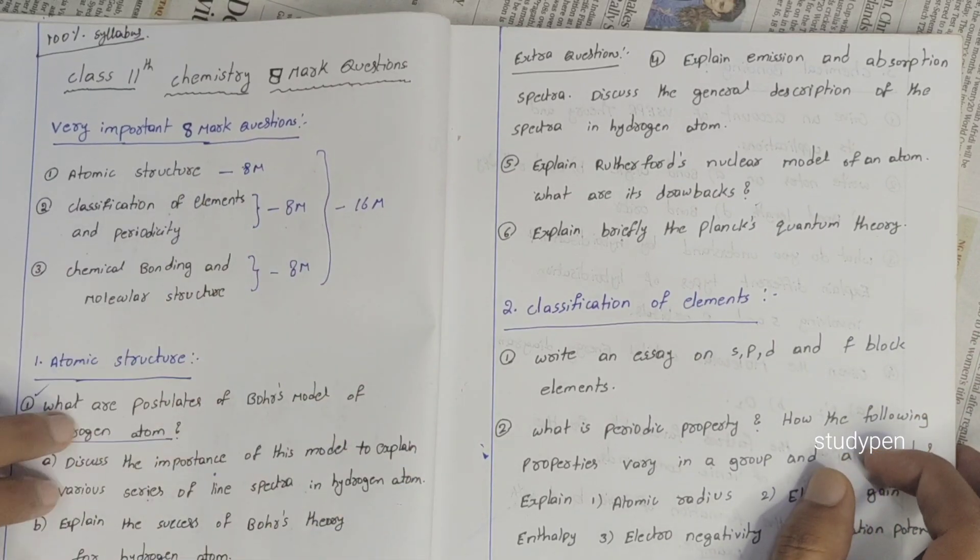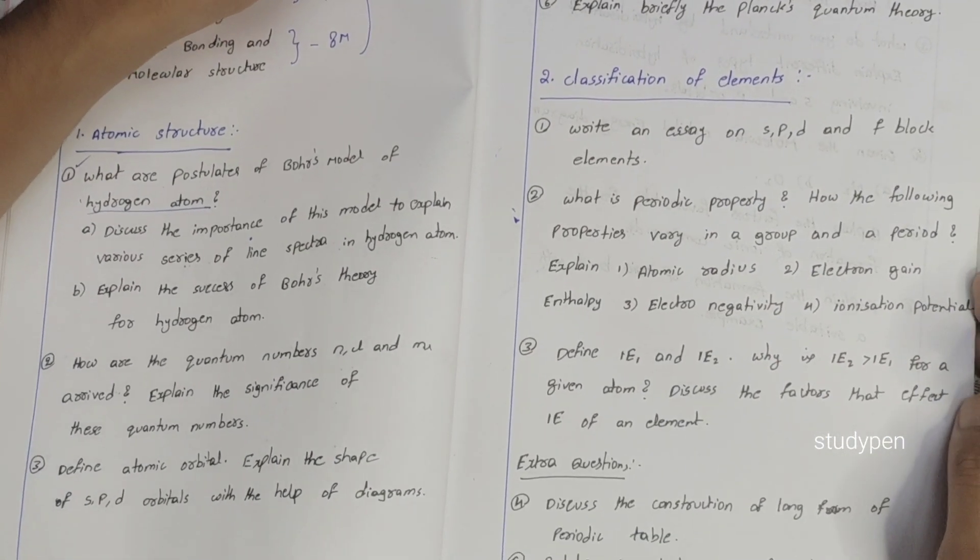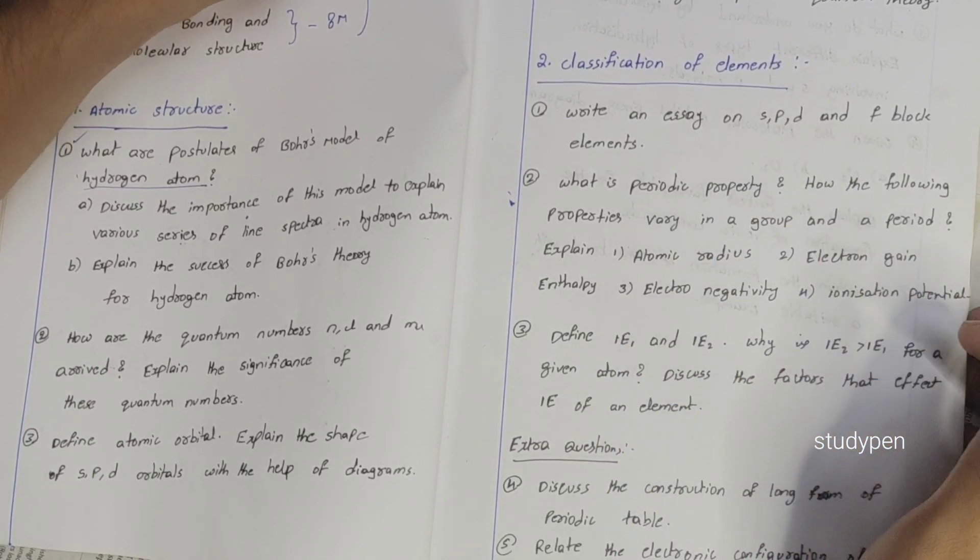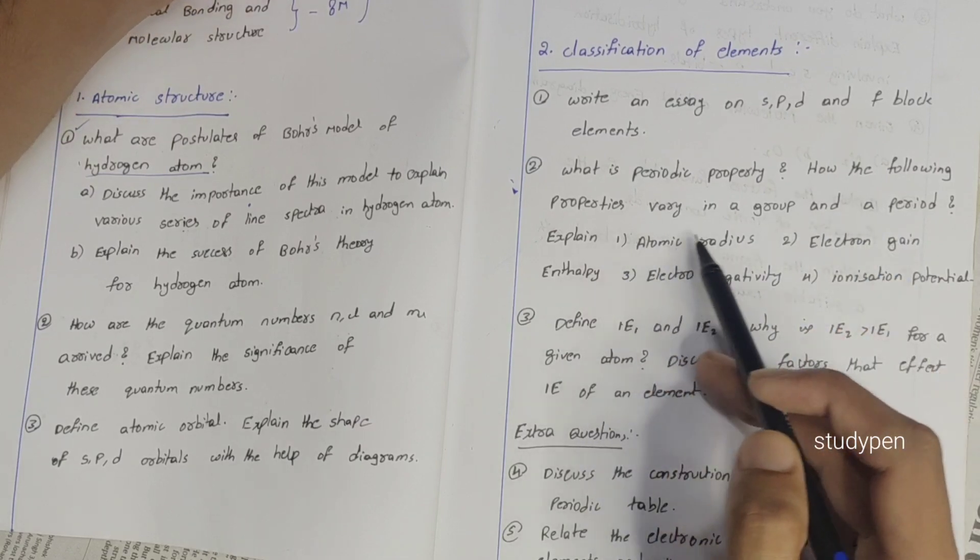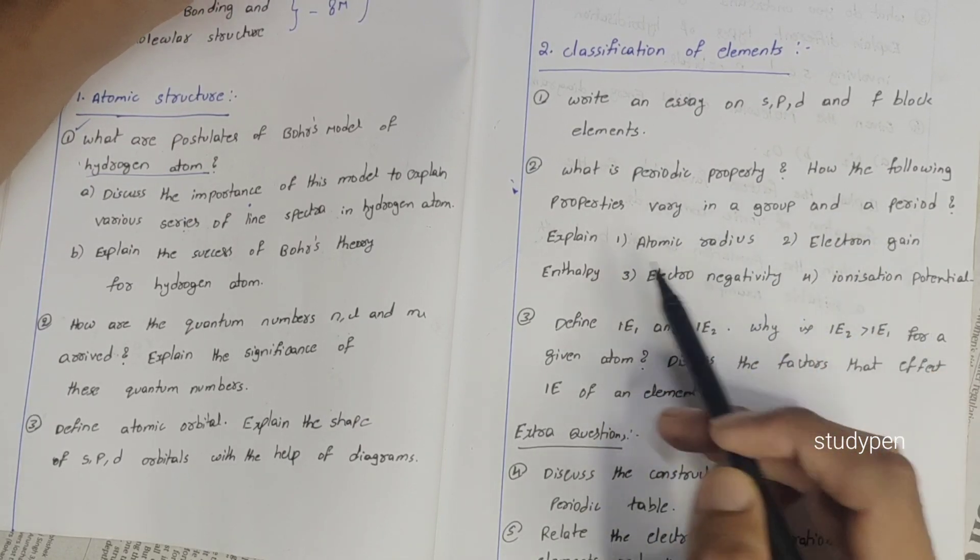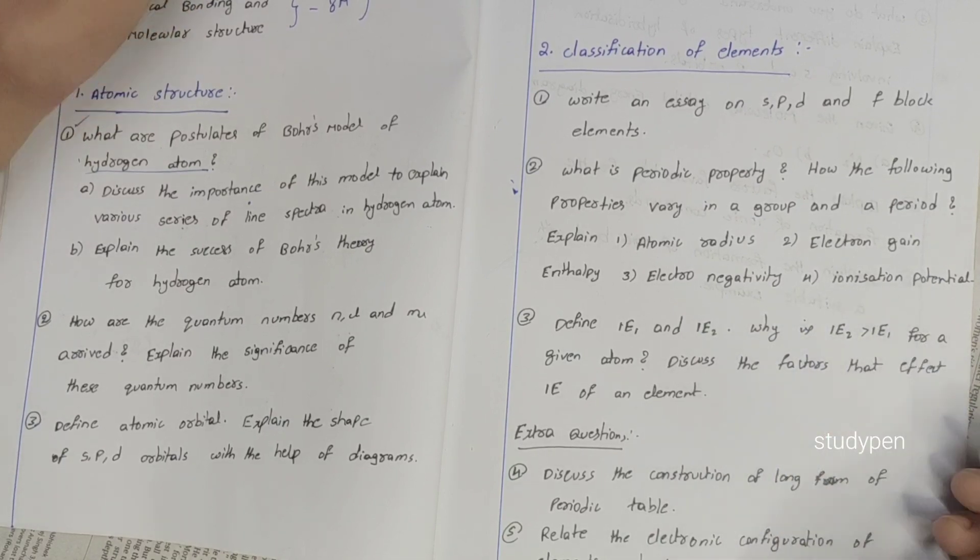Next, classification of elements. Write an essay on s, p, d, and f block elements. Next, what is periodic property? How do the following properties vary in a group and a period? Explain atomic radius, electron gain enthalpy, electronegativity, ionization potential.